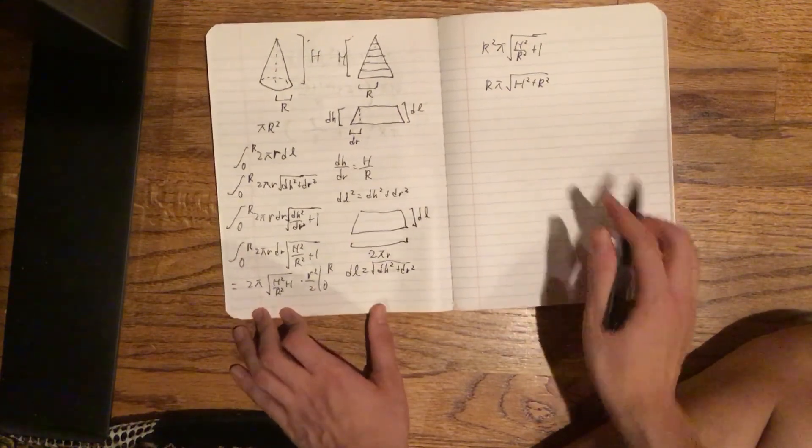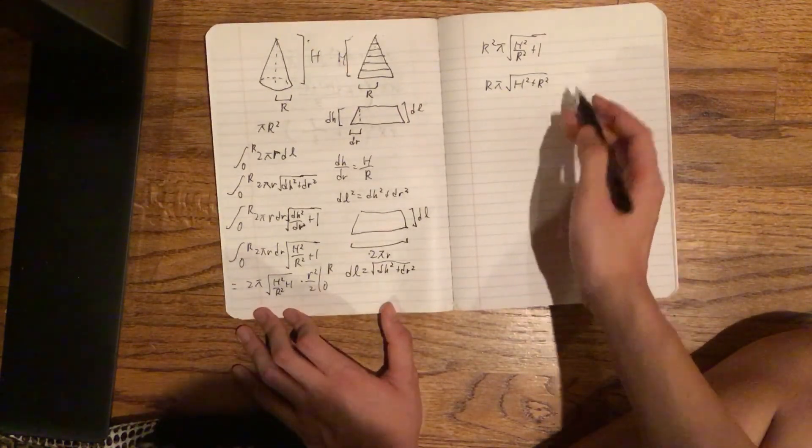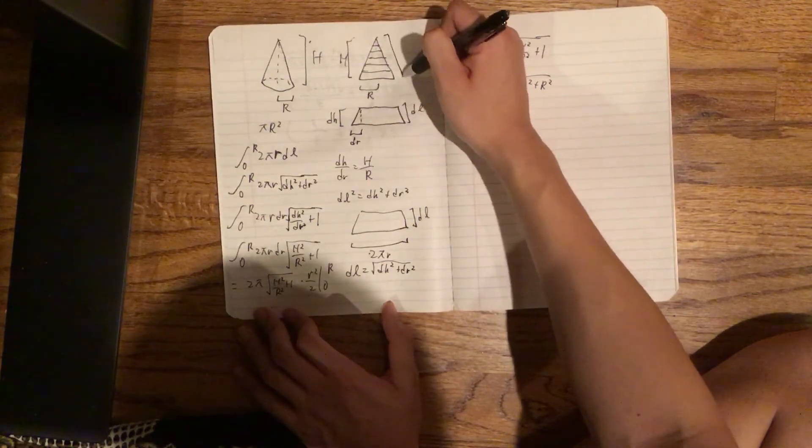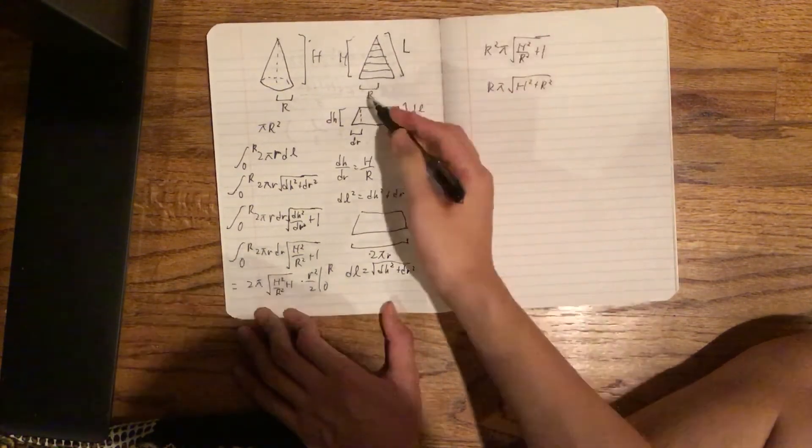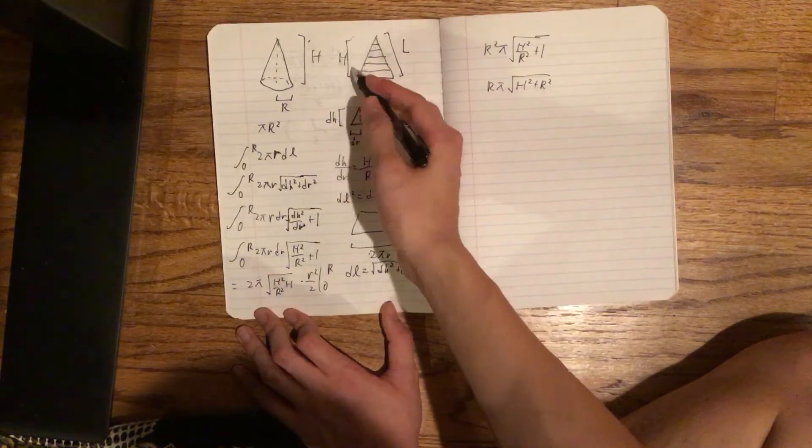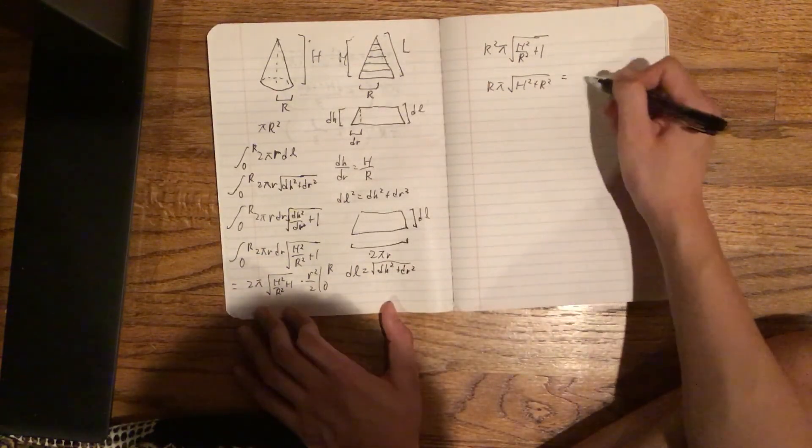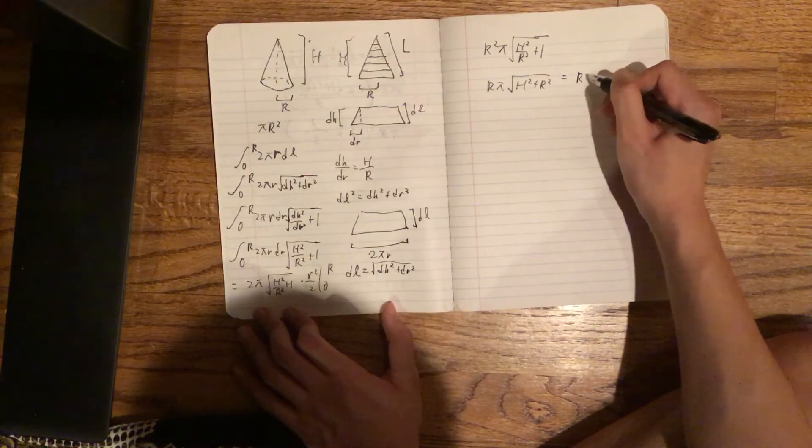But something you want to notice here is that this just equals l. Because by Pythagorean's Theorem again, r² + h² = l². And √(l²) would just be l. So we have rπl.